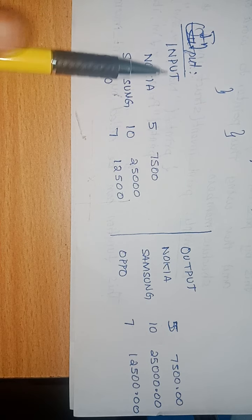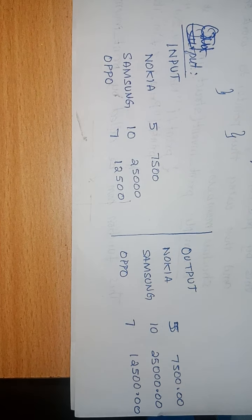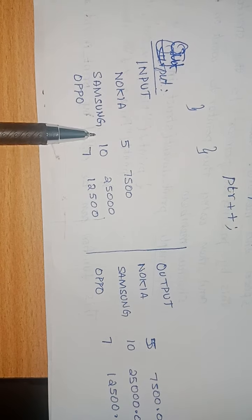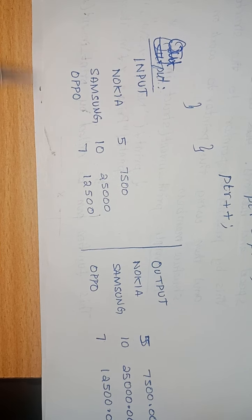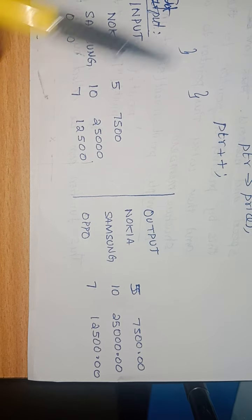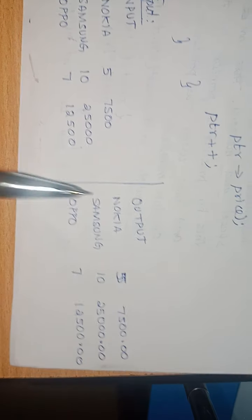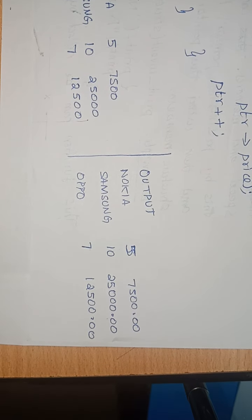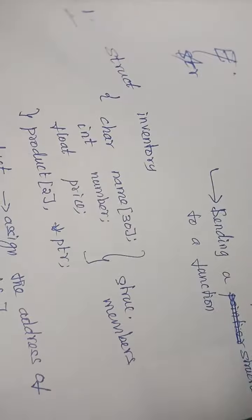The output looks like this: for input, the data entered might be Nokia with 5 items at 7500, Samsung with 10 pieces at 225000 - data about cell phones. When the while loop executes, this output is printed. Since 2 decimal places are specified, the price values are printed in that format. That is all about accessing structure members using a pointer variable.